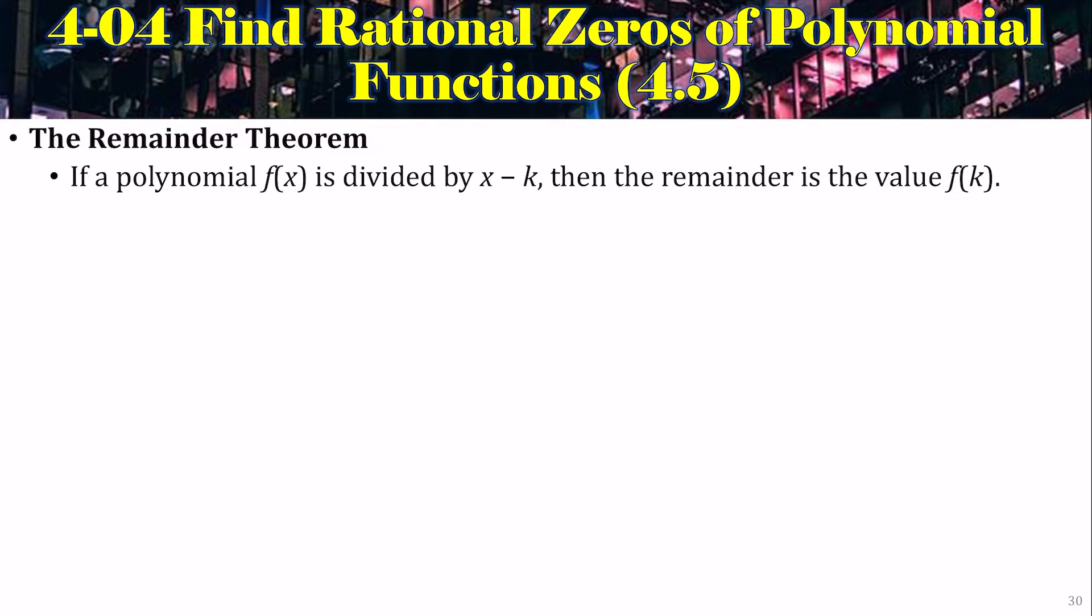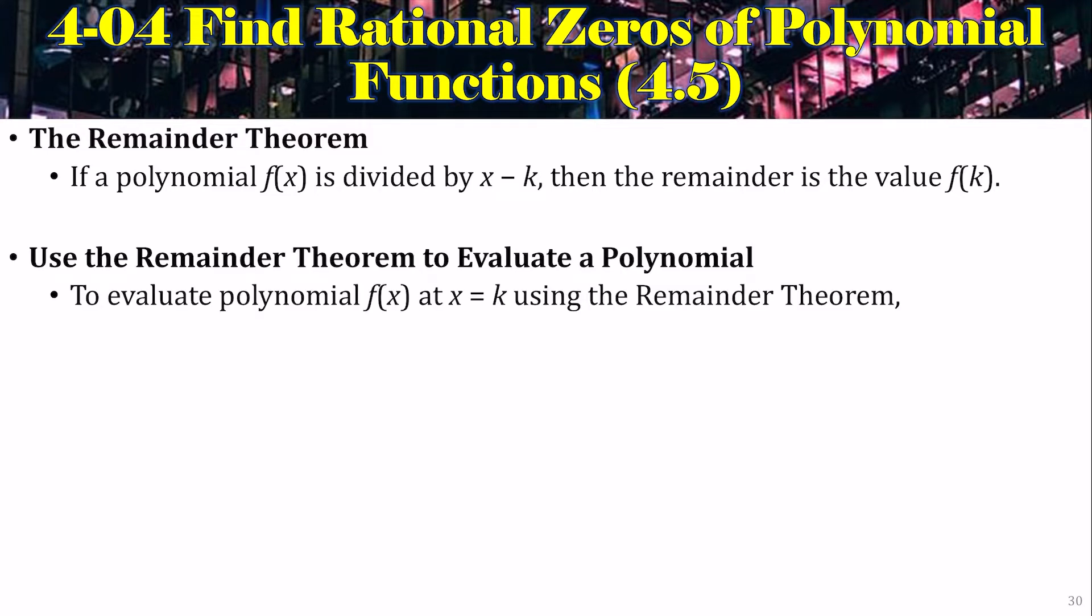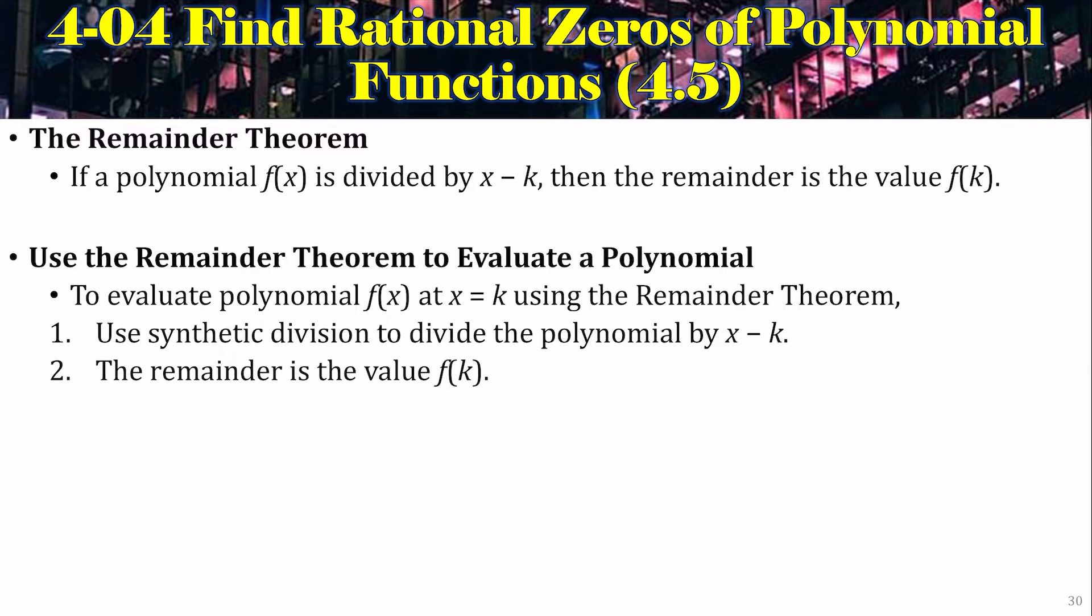So in other words, if you want to find the value of f of 2, let's say, we could do synthetic division with x minus 2. The remainder would be our value. I think, wow, that sounds like it's really long. Actually, synthetic division is really short. To use the remainder theorem to evaluate the polynomial, you're going to use synthetic division to divide by x minus k, and the remainder is f of k. It's quick, easy to do, usually by hand.